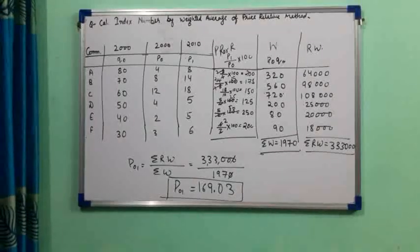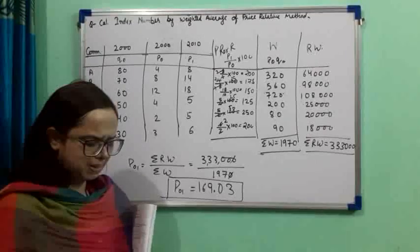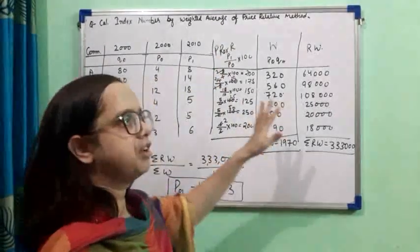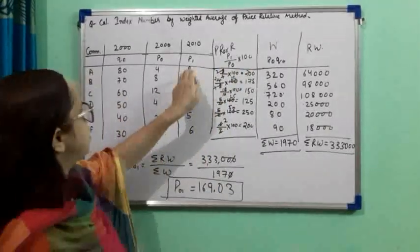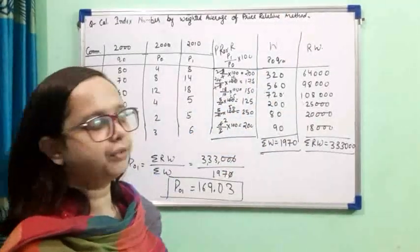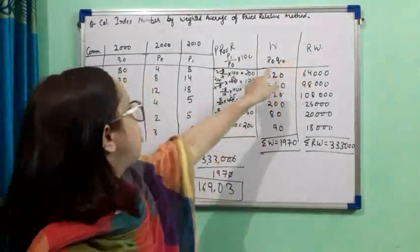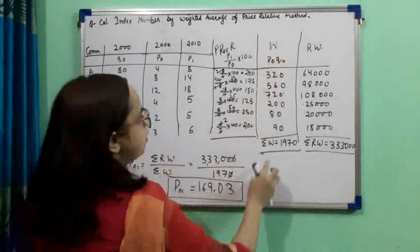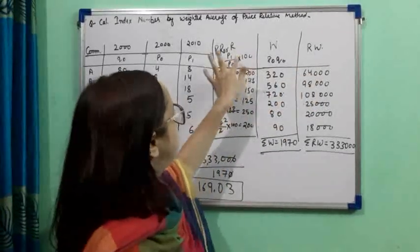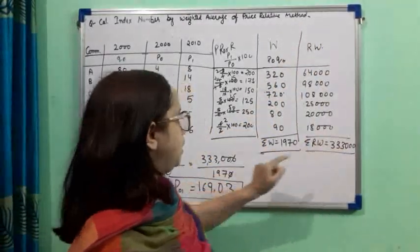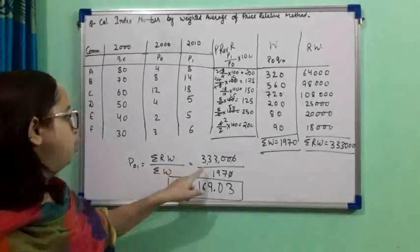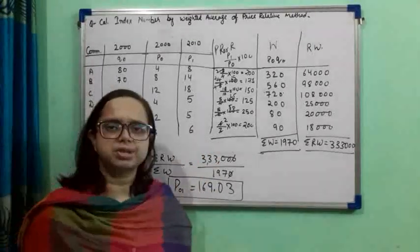To recap: from the question we had Q0, P0, and P1. We calculated price relative R = P1/P0 × 100, then weight W = P0 × Q0. Then summation W, then RW = R × W, then summation RW. Finally, P01 = ΣRW / ΣW = 169.03.